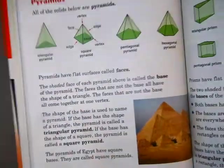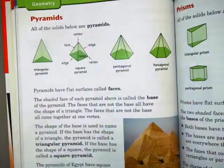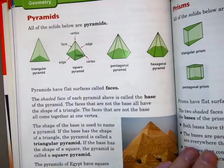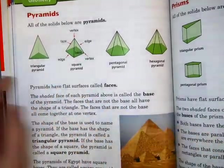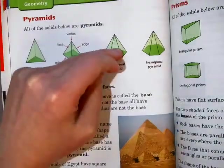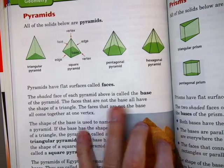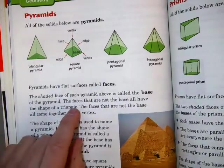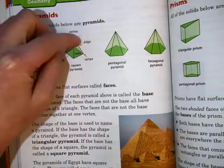Pyramids. Just going to take a quick look at Pyramids here. All of these solids below are Pyramids. Pyramids have flat surfaces called faces, and the shaded face of each pyramid above is called a base. The faces that are not the base all have the shape of a triangle, and they come together at one vertex, or one point.